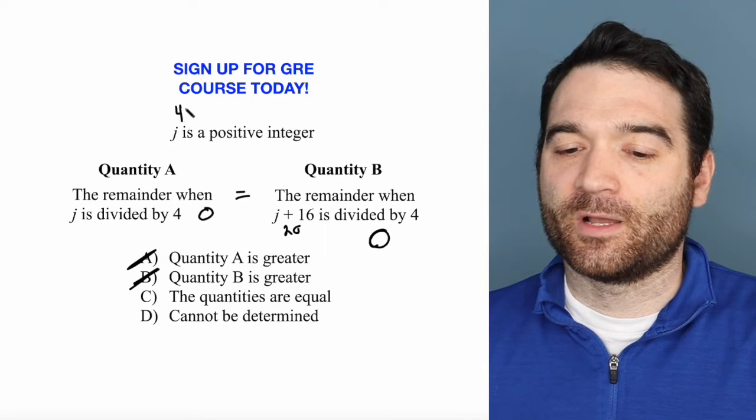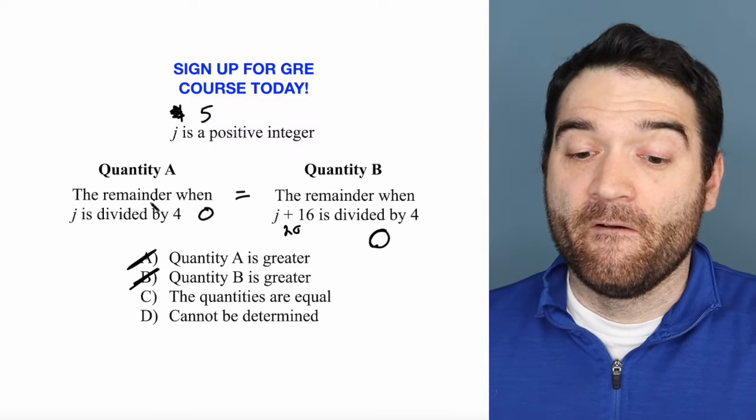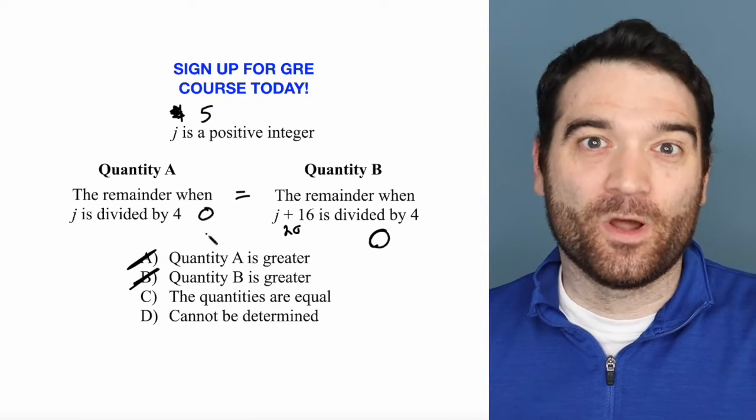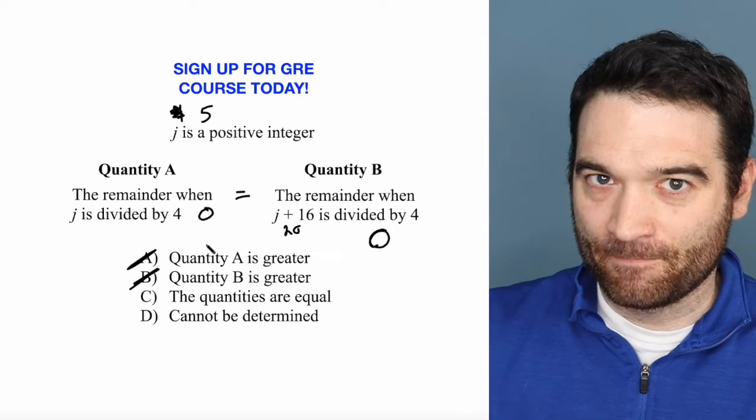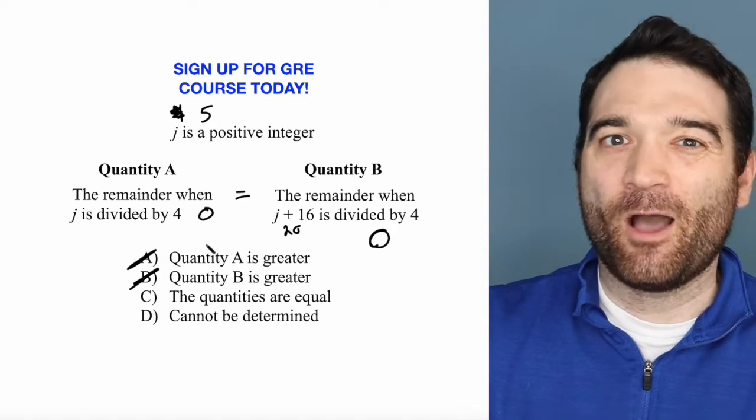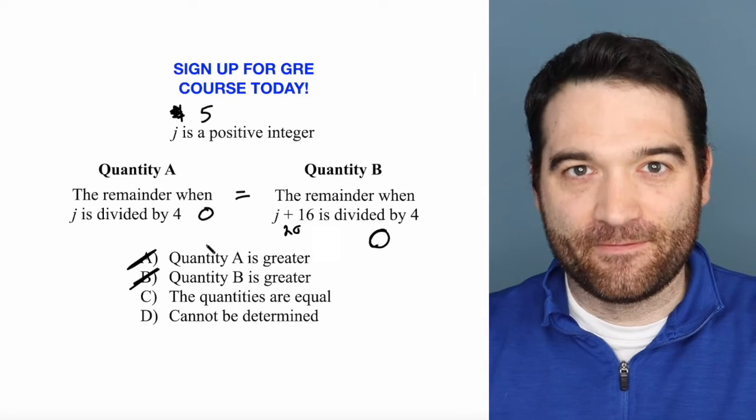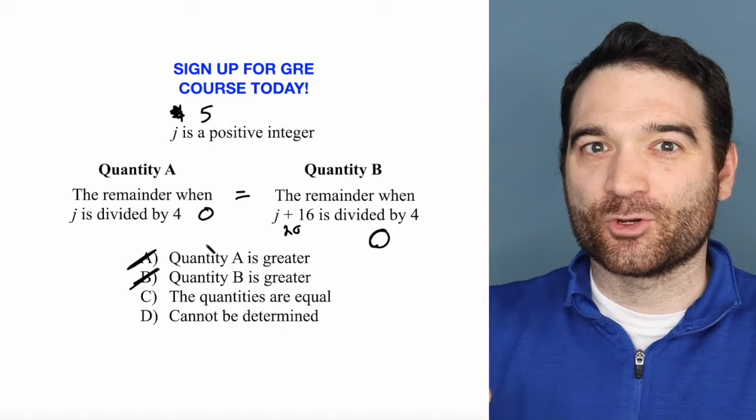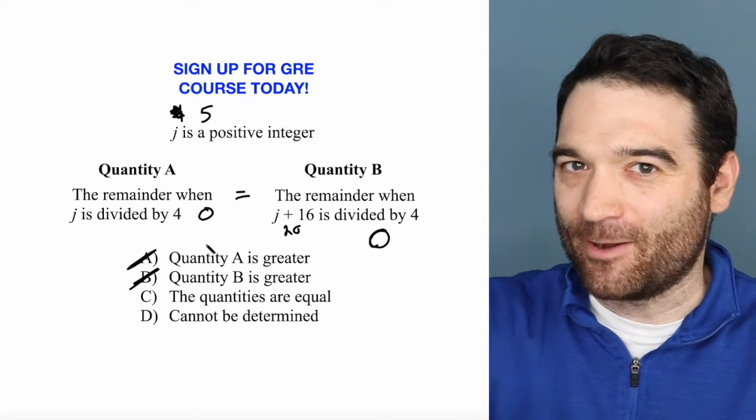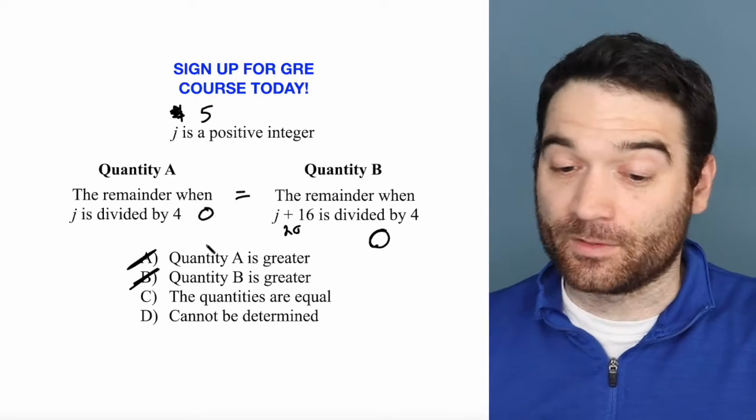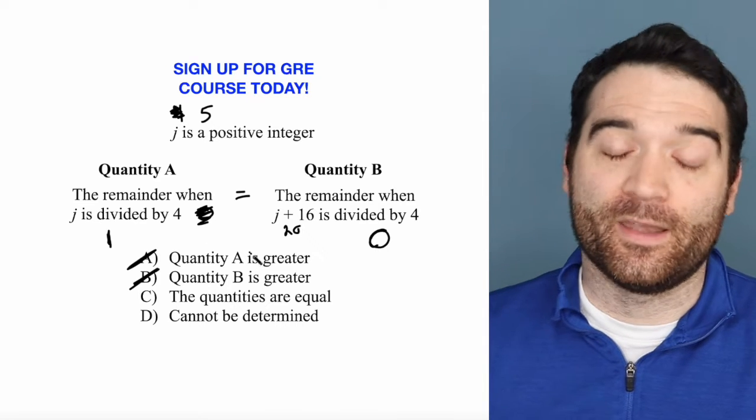Well, what happens if we do a completely different positive integer, like, say, 5, right? 5 divided by 4. What is the remainder when we do that? How many times does 4 go completely into 5? One time. And how much is left over? 1, right? When you divide 5 by 4, there's 1 card left over. You have 5 cards and 4 people, and you deal everybody out equally. There's 1 card left over. So when J is 5, that answer is 1.